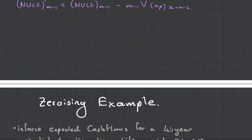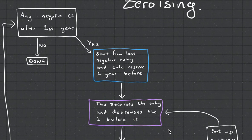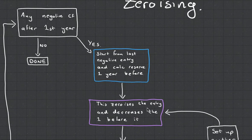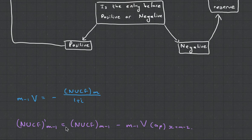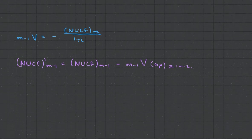So now what do we do? We go back to our little diagram. It says, this zeroizes the entry and decreases the one before it. So what we do is we now use the purple formula. And what this is saying is the non-unit cash flow of the year before now needs to decrease by this reserve that we've set up, times it by the probability that the person survives to that age.